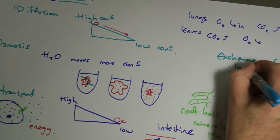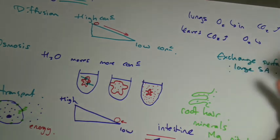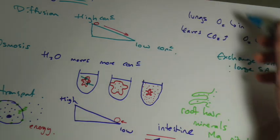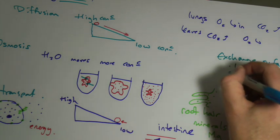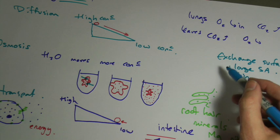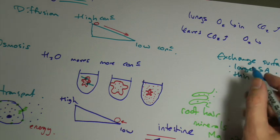A large surface area. The larger your intestines, the larger the surface area the more you can absorb. The larger a leaf the more it can absorb. They should be thin, so that whatever you're absorbing doesn't have to go through lots and lots of material.